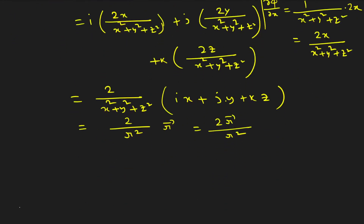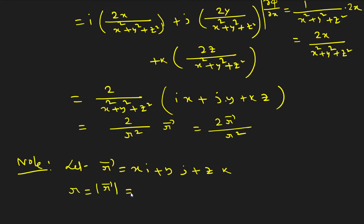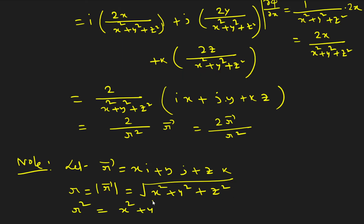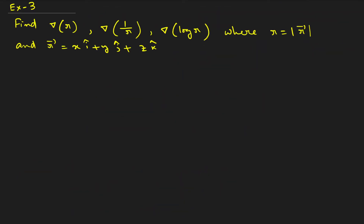You may wonder where r comes from. If we define r̄ = x i-cap + y j-cap + z k-cap, then r = |r̄| = √(x² + y² + z²), so r² = x² + y² + z². Therefore we can write the denominator as r². You can also leave the answer in expanded form since this is a find-the-value problem, not a prove-type problem.